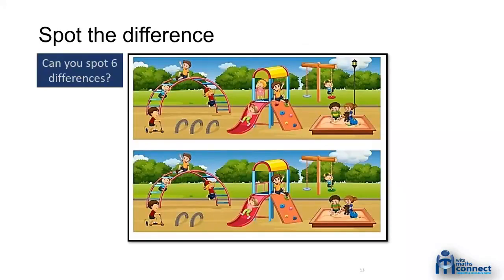Let me lighten things up. You know the 'spot six differences' activity with two almost identical pictures? We can see differences because most of the bottom picture is the same as the top — only a few things are different. It's that contrast of invariance with a little variance that makes it possible to see those changes. A lot of invariance makes the small changes visible.